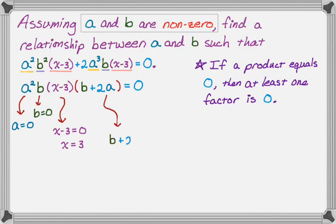So I need B plus two A to equal zero. And in this case, I'm going to solve for B because that's the easiest thing to do. So I'm going to subtract two A from both sides. If B is equal to negative two A, that's a relationship between A and B such that this whole product is equal to zero.